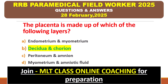The placenta is made up of which of the following layers? Endometrium and myometrium, decidua and chorion, peritoneum, or amnion? The right answer is option B — decidua and chorion.